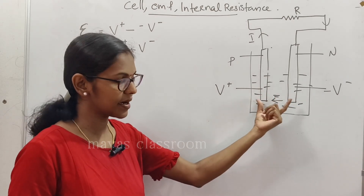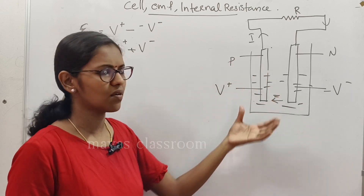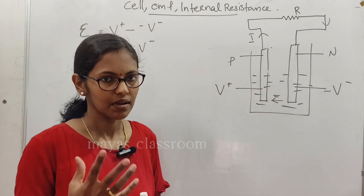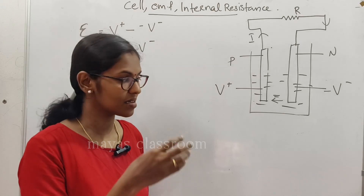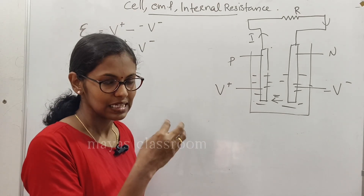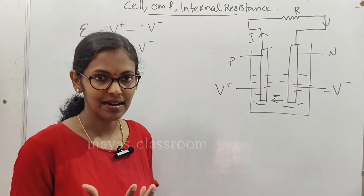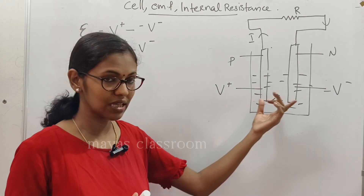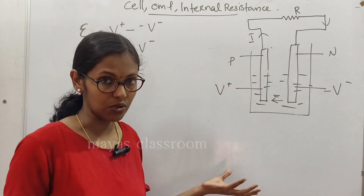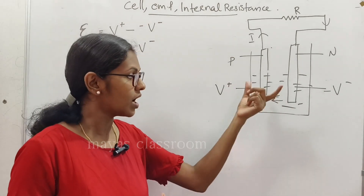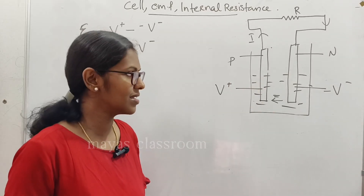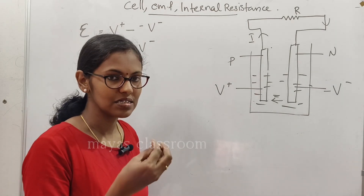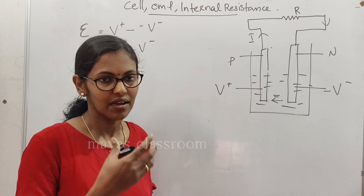The internal resistance depends on several factors: the distance between the electrodes, the area of the plates, the nature of the electrolyte, and the temperature of the cell.